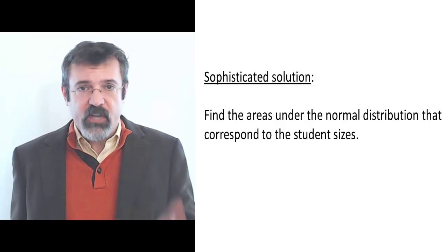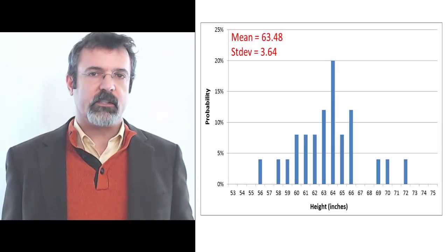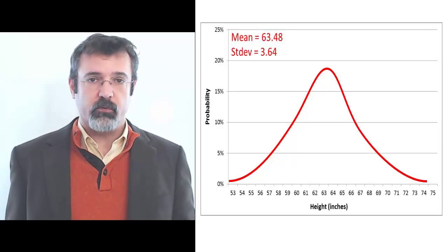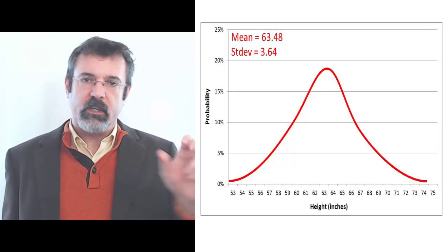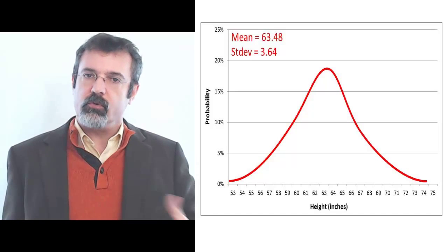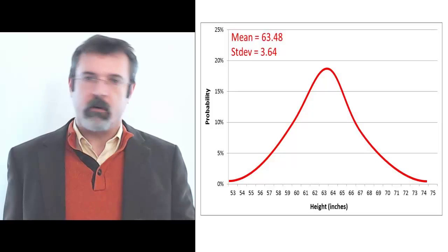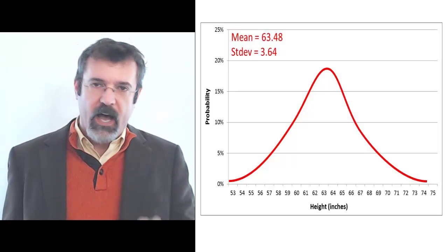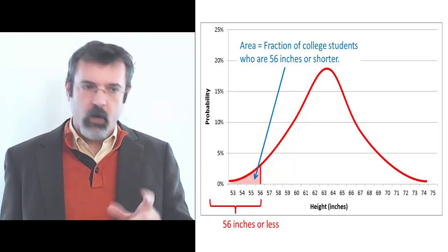In our sample of college students, the average height is 63.48 inches and the standard deviation is 3.64 inches. If we take a normal distribution with a mean of 63.48 and a standard deviation of 3.64, we can ask what is the area under the normal distribution in various locations. The area under the normal distribution tells us the percentage of students who have those various heights. For example, suppose we want to know what percentage of college students are 56 inches tall or shorter — there's nobody like that in our sample, but we can look at the normal distribution and find the area from 56 and below.